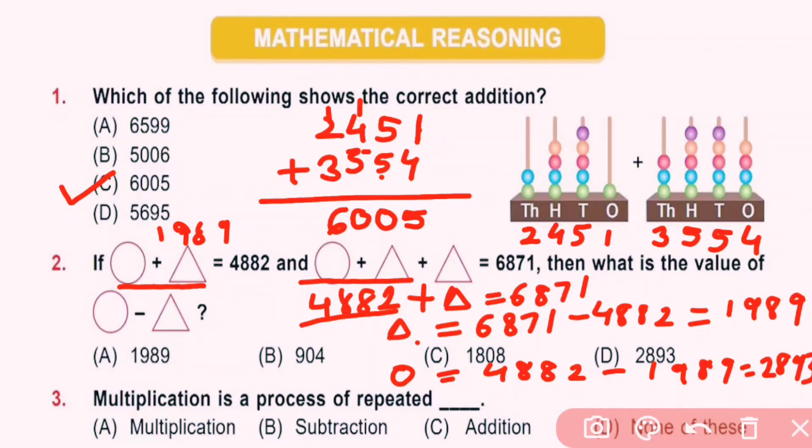We want the value of circle minus triangle. So circle is 2893 minus triangle is 1989 equals 904. So B is correct answer.